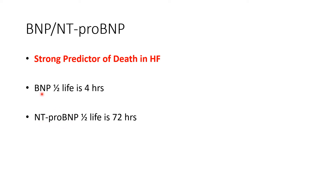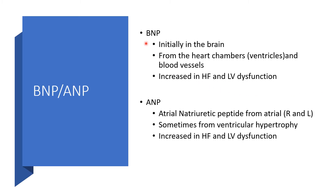BNP will have a shorter half-life span compared to NT-proBNP. The half-life of BNP is 4 hours, while that of NT-proBNP is 72 hours. BNP is initially found in the brain; we can also get it from the heart chambers, particularly the ventricles and blood vessels. It is expected to increase in heart failure and left ventricular dysfunction.